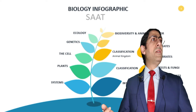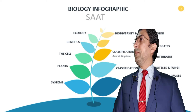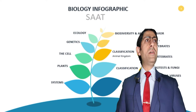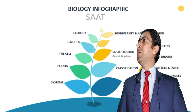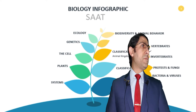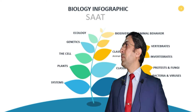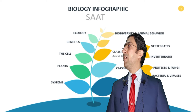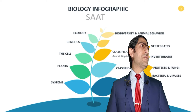Classification is broken down into bacteria and viruses, then protists and fungi. Then I'm going to talk about the animal kingdom, split into vertebrates and invertebrates. Then I'll talk about plants, human systems, the cell, genetics, ecology and biodiversity.